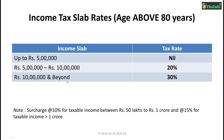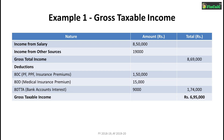Let us now see a couple of examples to see the calculation process. In this first example, income from salary is Rs 8,50,000. Income from other sources is Rs 19,000, which makes a gross total income of Rs 8,69,000. Our total deductions considered in this example are Rs 1,50,000 in section 80C.